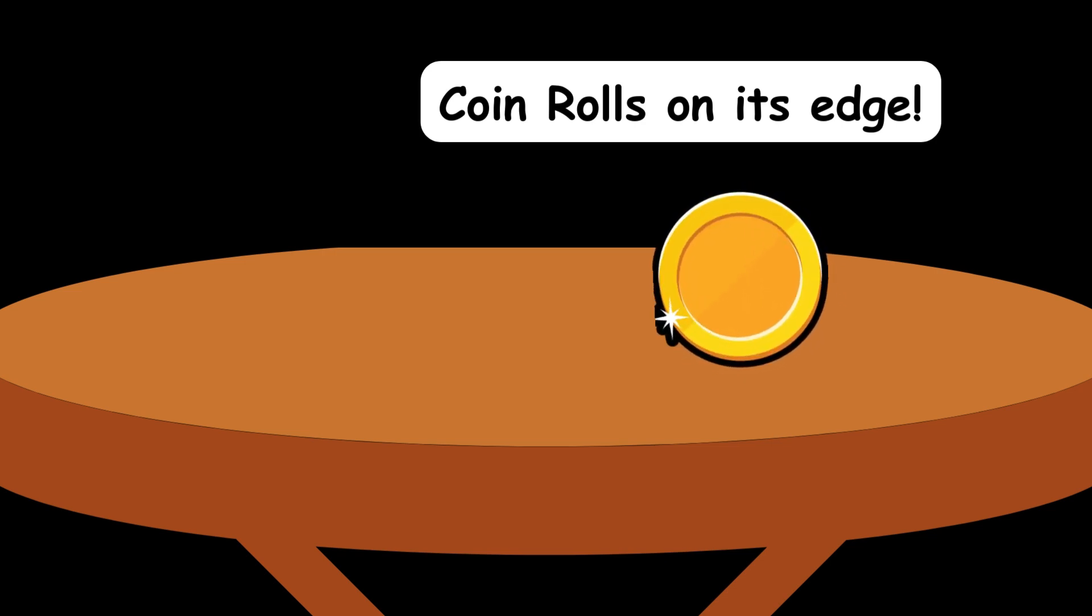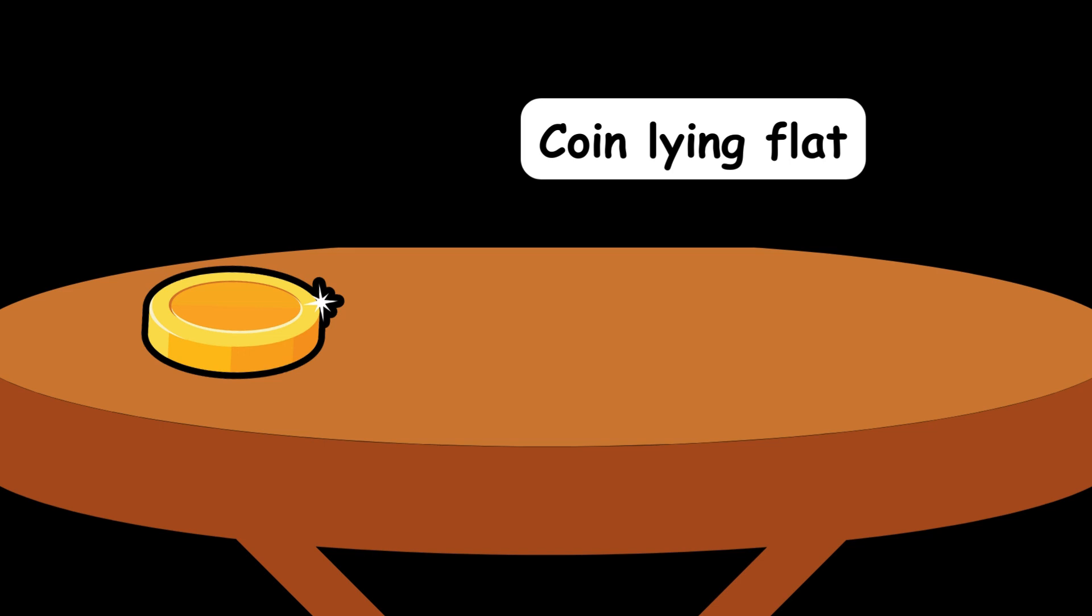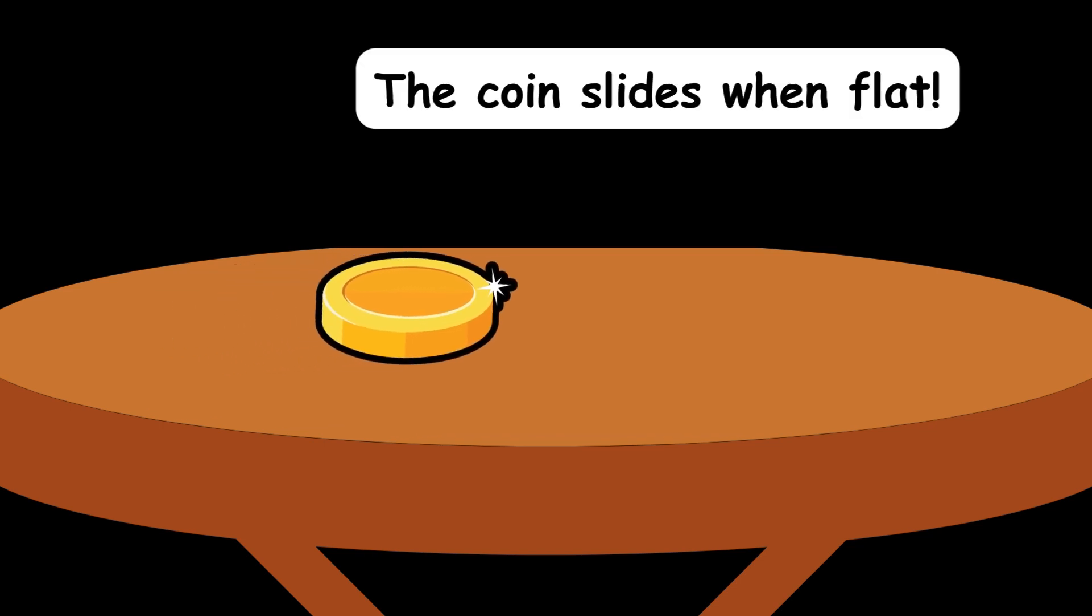Then she placed the same coin flat on the table and pushed it again. This time it moved straight, just like the book. There was no turning. Now it slides. Whoa! The same coin can do both. It just depends on which side I put it on.